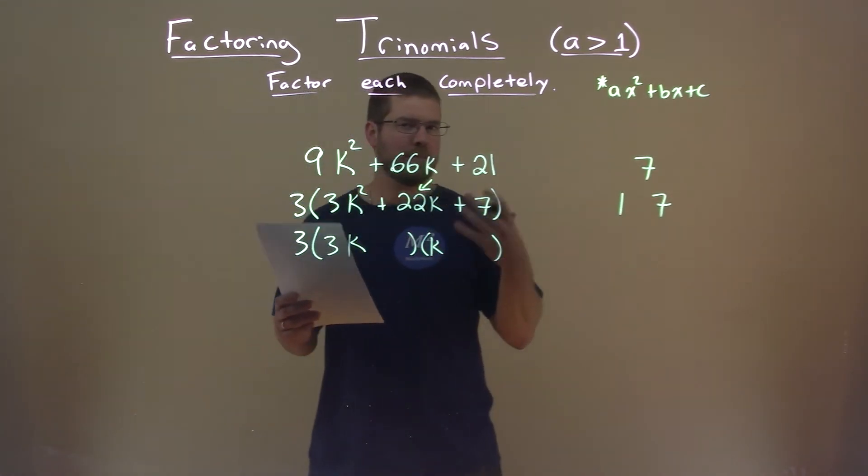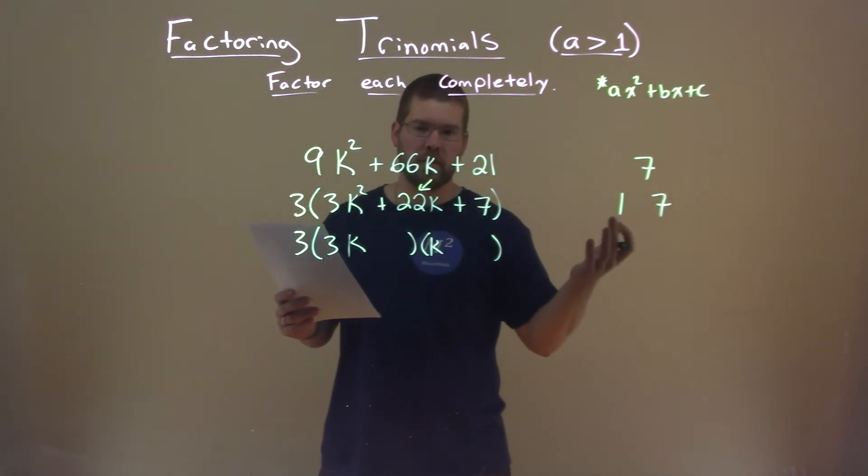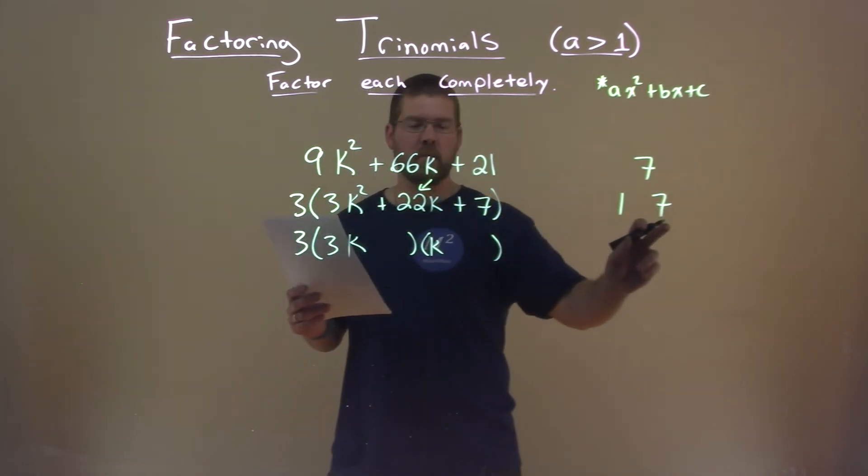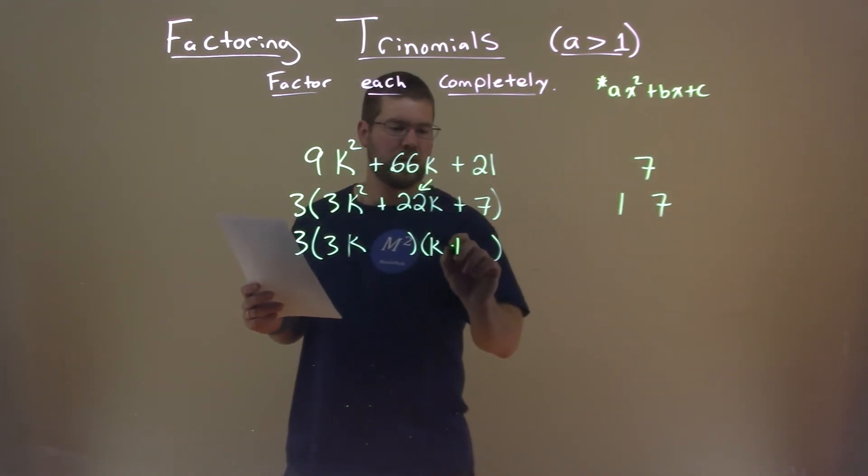And I always go with my first best guess that gets me closest to 22, which is 3 times 7, 21. 3 times 7 is 21, plus 1 times 1, which is 22. So that was actually pretty easy.